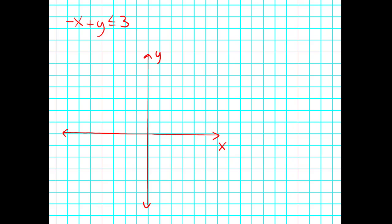Let's try another example: negative X plus Y is less than or equal to 3. This time it is a solid line. Second, I want to graph my boundary: negative X plus Y equals 3. Solving for Y gives Y equals X plus 3. The Y-intercept is at 3, and my slope is 1 over 1 going up.